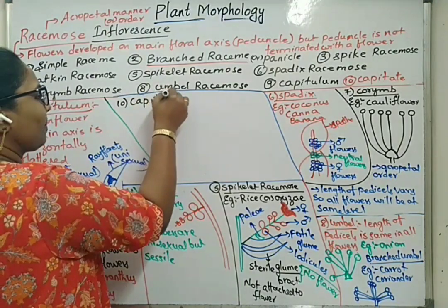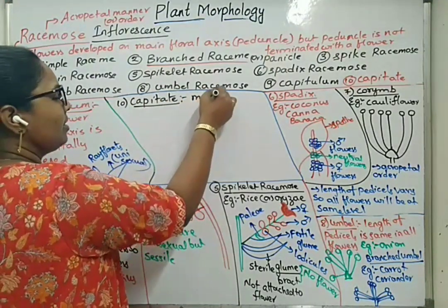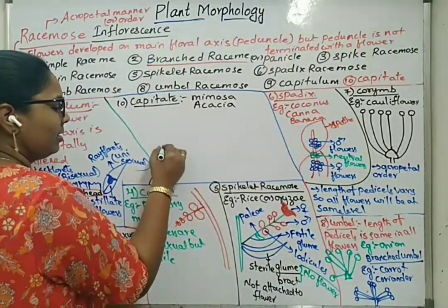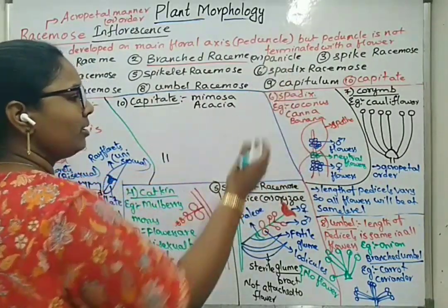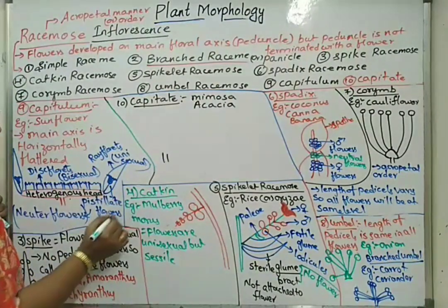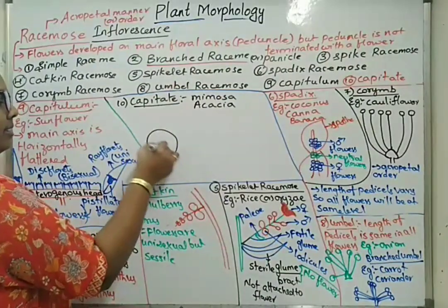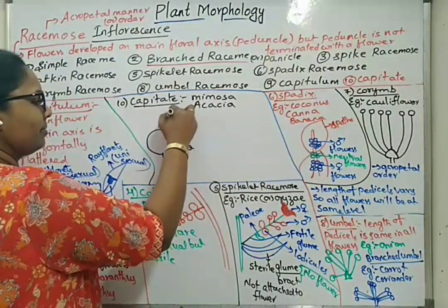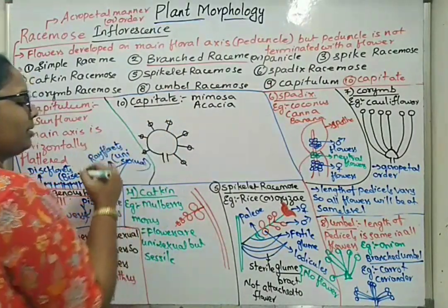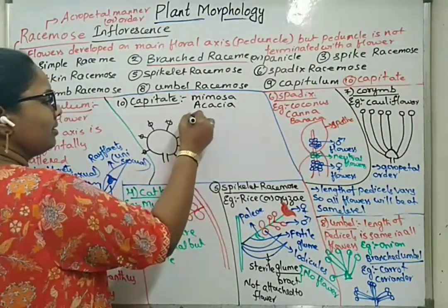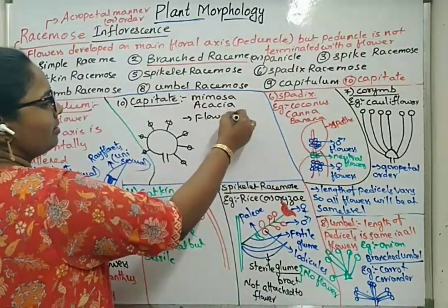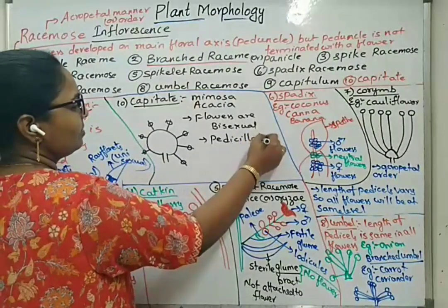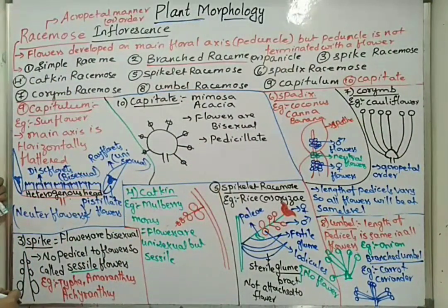Capitate inflorescence is seen in case of Mimosa pudica — the touch-me-not plant — and also Acacia. Here, there is one stalk holding the total inflorescence. Unlike other types where the peduncle grows longitudinally or is horizontally flattened, in capitate type it is just like a circular or ball-like head where all pedicels have the same length. Flowers are bisexual and pedicellate. These are the different types of racemose inflorescence.